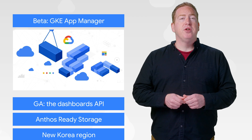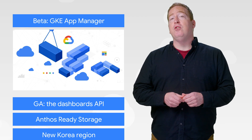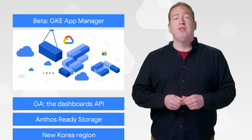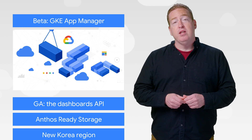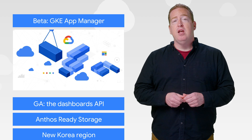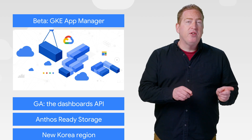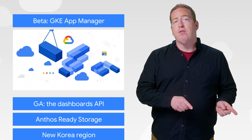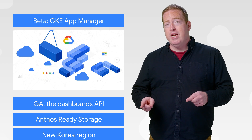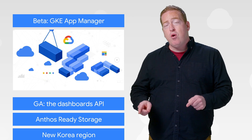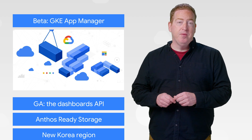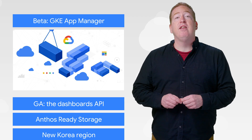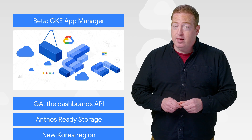Application Manager is a beta add-on to Google Kubernetes Engine that leverages GitOps principles to help you manage release configurations. This cluster add-on pulls Kubernetes manifests from a Git repository and then deploys those as an application in the cluster. Give it a try and let us know what you think.